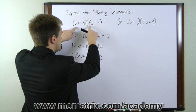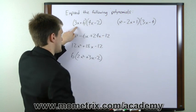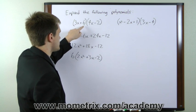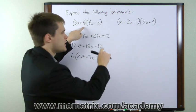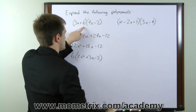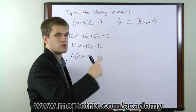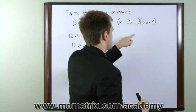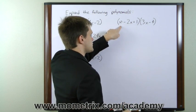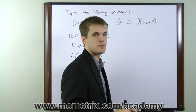The FOIL method takes the first term in the first expression and multiplies it in order by each of the terms in the second expression. Then moves on to the second term in the first expression and multiplies it by each of the terms in the second expression. So to extrapolate that to a three-termed expression, we'll start with the first term, move to the second term, and then move to the third term.